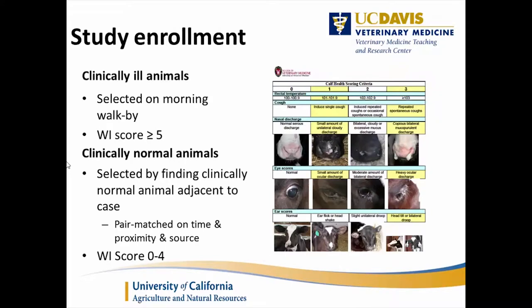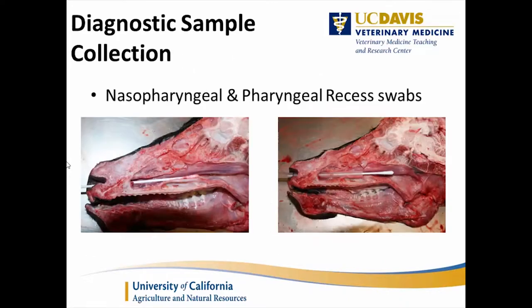We used Dr. McGurk's scoring system. Clinically ill animals were selected based on a Wisconsin score of greater than or equal to 5. Clinically normal animals were matched pairs for those cases and could have scored anywhere from 0 to 4. We also collected swabs for microbiology, virology, and bacteriology — both a nasopharyngeal swab from the nasal cavity and a pharyngeal recess swab, which was a guarded swab that went a little bit deeper.